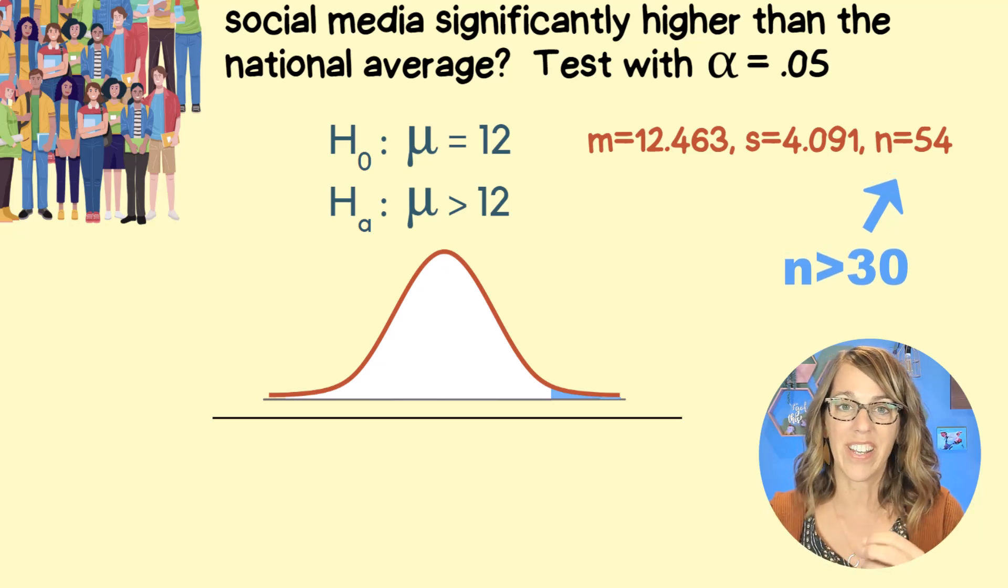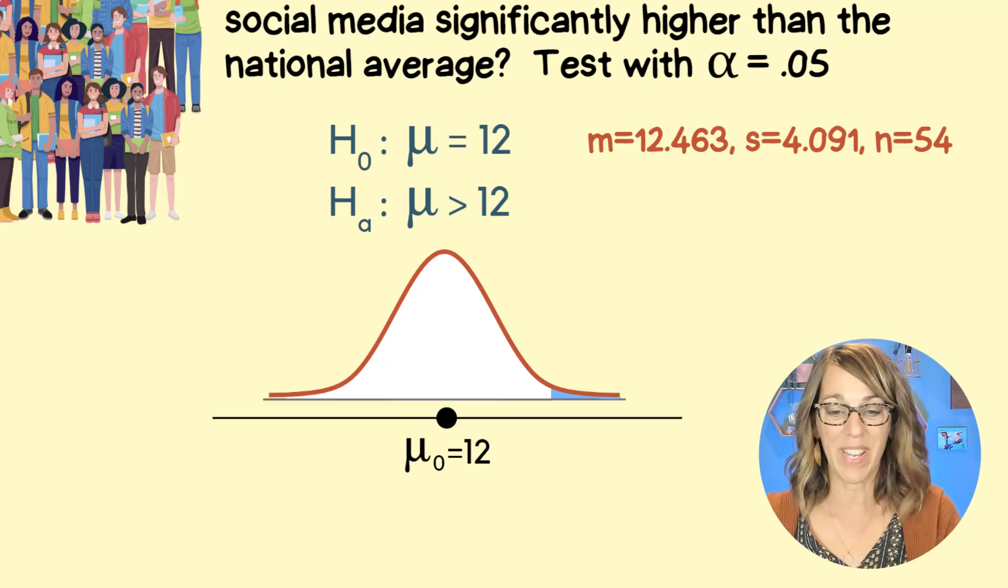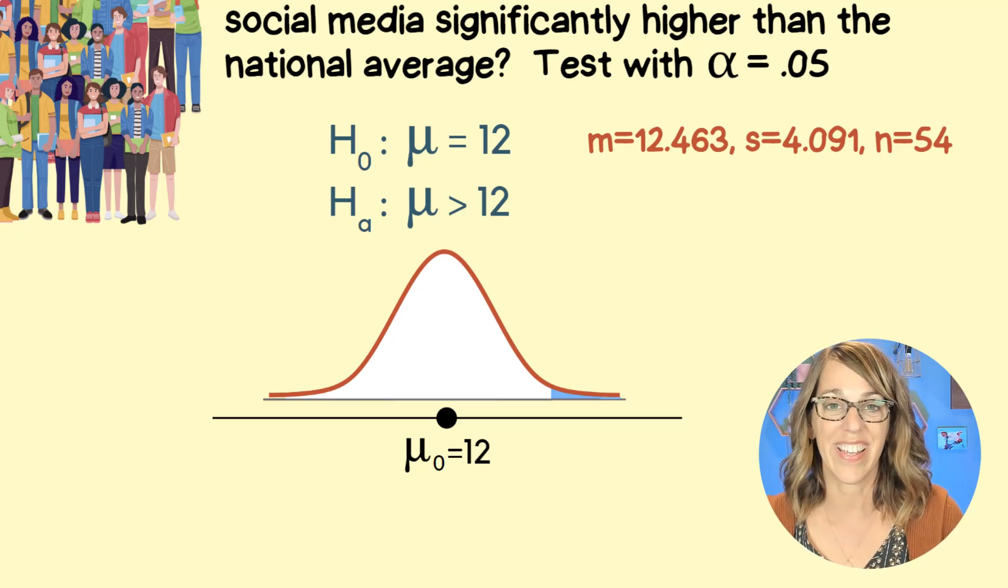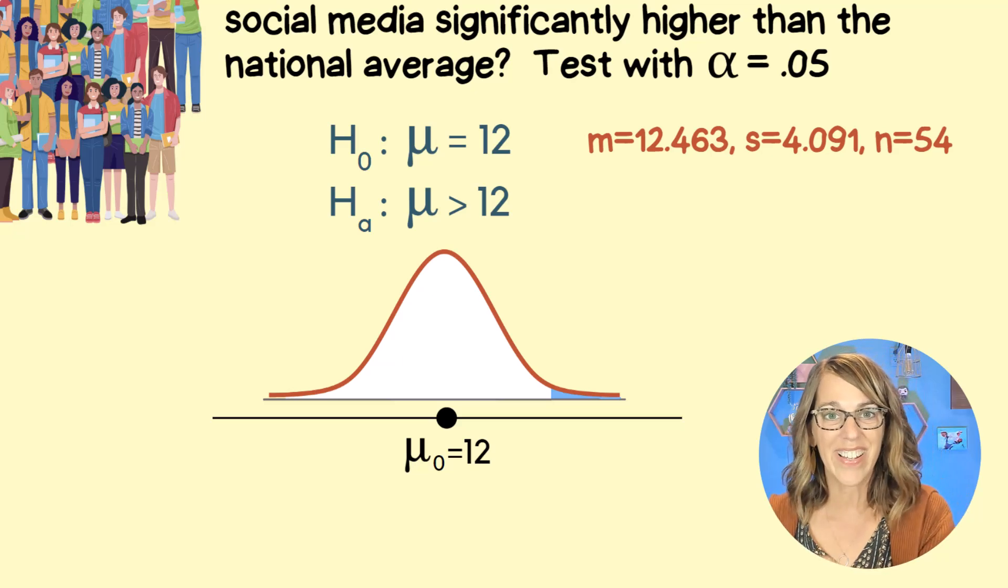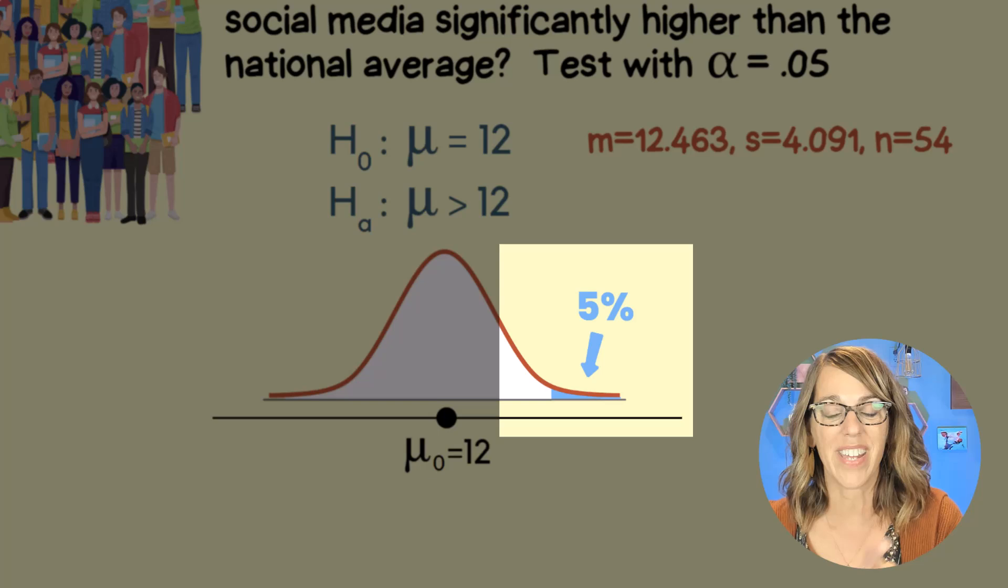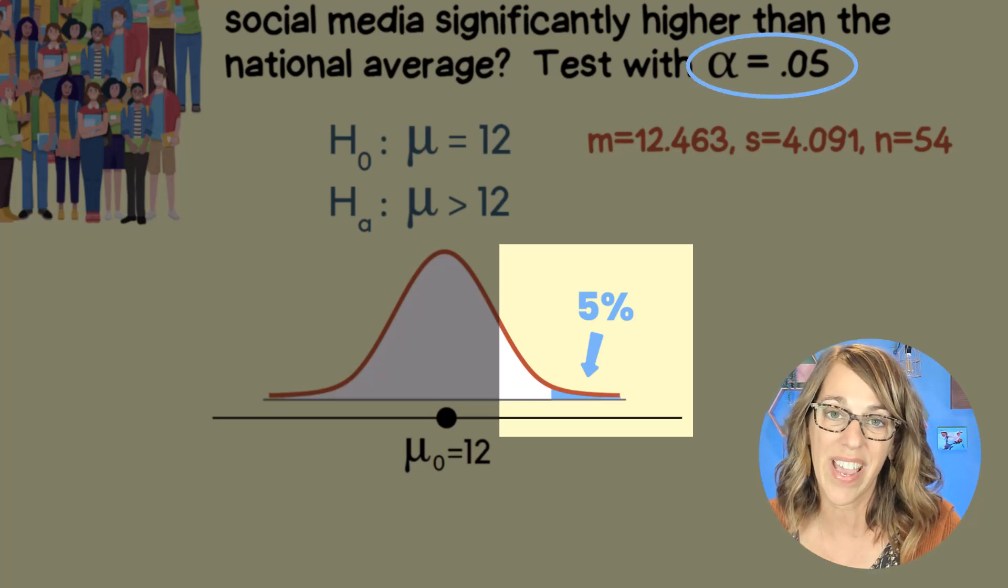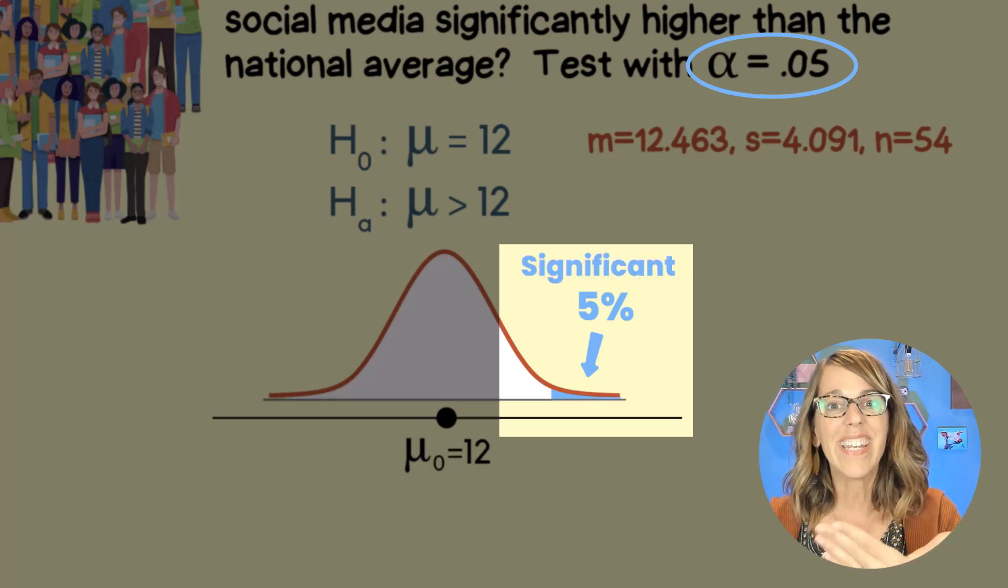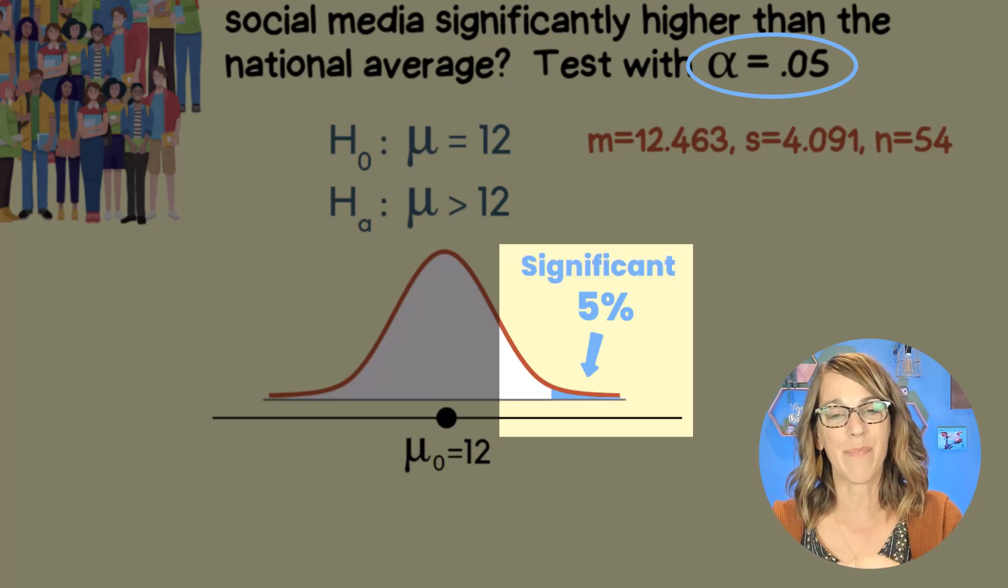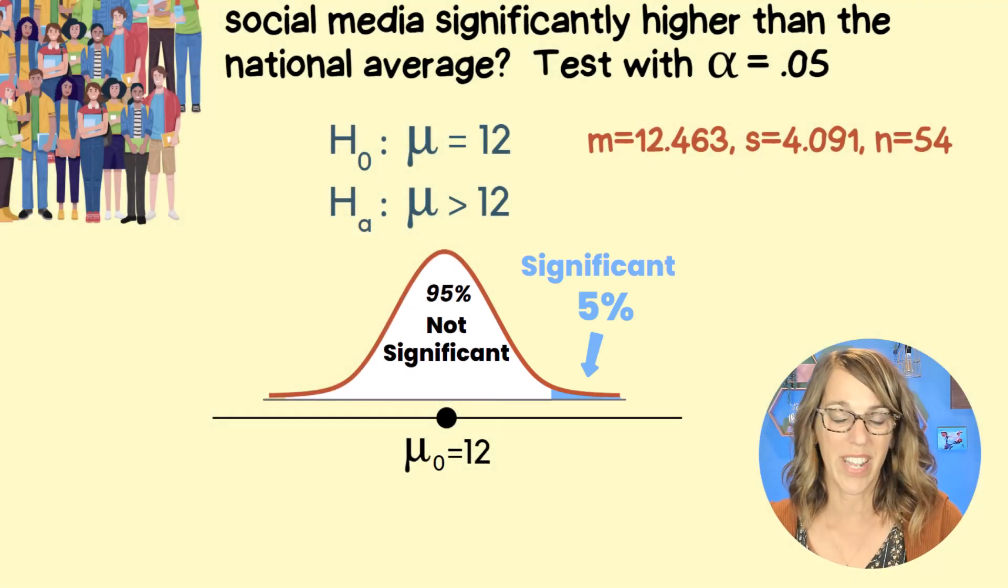Now this normal curve is going to contain our expected value, which is our hypothesized mean that's going to go right there in the middle. And notice that I've got this tail in the upper right. That tail represents my 5%. That's my alpha or my significance level of 0.05. If we land in this upper 5%, that means that we are significantly higher than the other 95% that would be not significant.